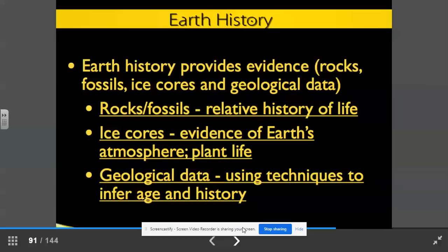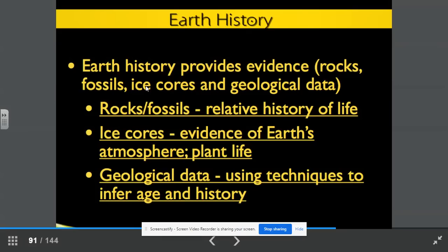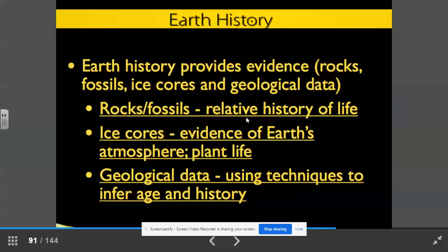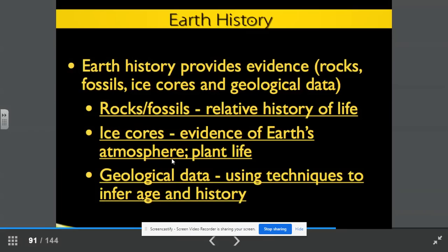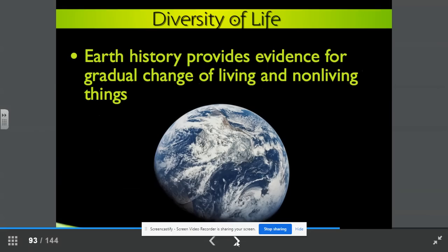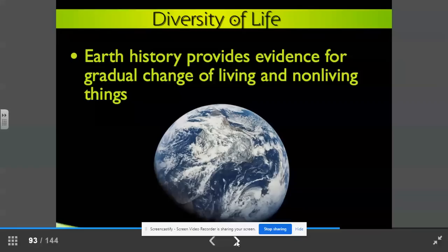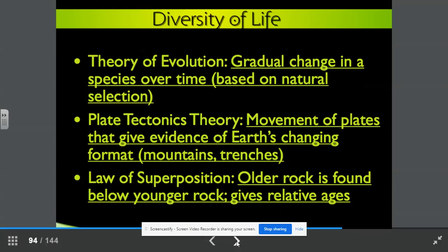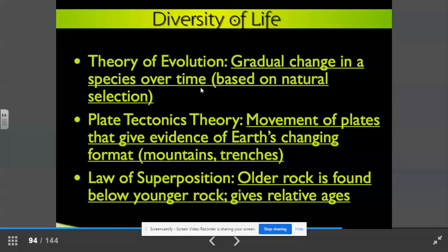Earth history provides evidence such as rocks, fossils, ice cores, and geological data. Rocks and fossils give us relative history of life. Ice cores give us evidence of Earth's atmosphere and plant life. Geological dating uses techniques to infer age and history. Diversity of life, on page 12. Earth history provides evidence for gradual changes of living and non-living things. The theory of evolution tells us a gradual change in a species over time based on natural selection. Remember our study of Darwin and his finches and other organisms?